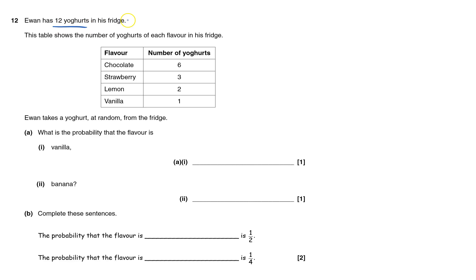Here we've got 12 yogurts in this fridge with different flavors. If Ewan takes a yogurt at random, we can look at the probability. The probability the flavor is vanilla - how many ways can you pick vanilla? One out of 12. That's one out of 12, which must be given as a fraction.